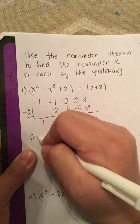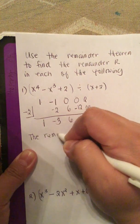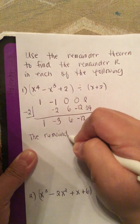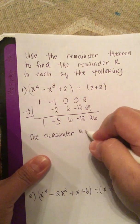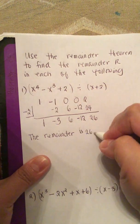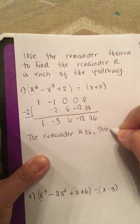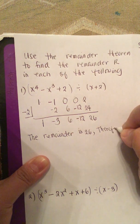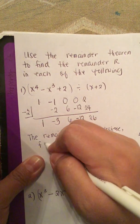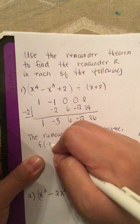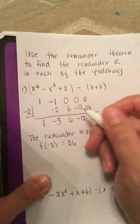The remainder is 26. Therefore, f of negative 2 is equal to 26.